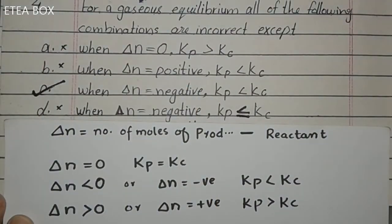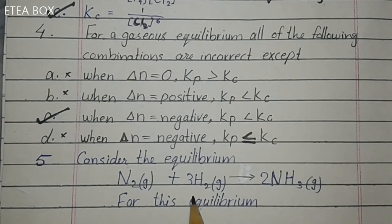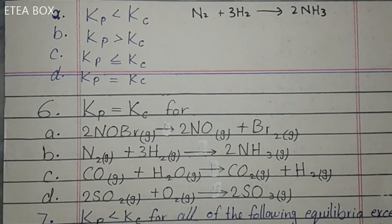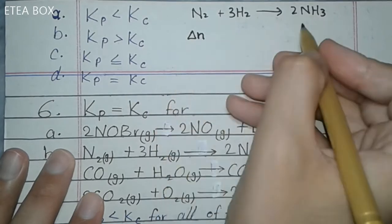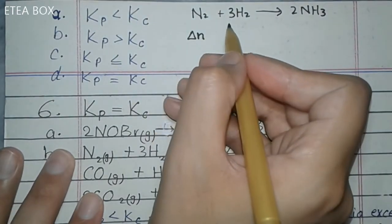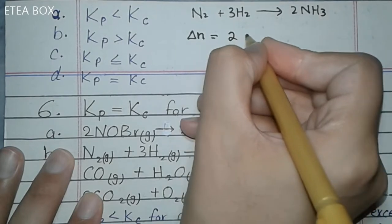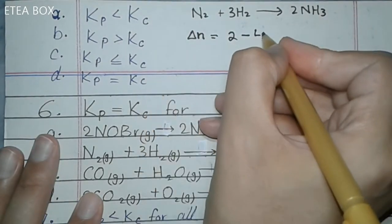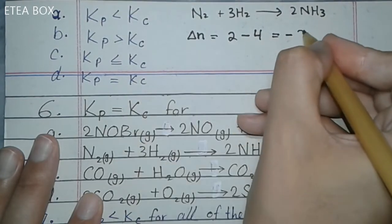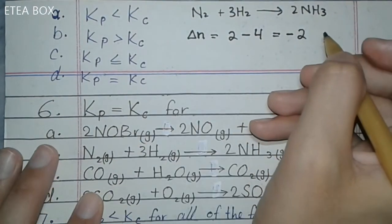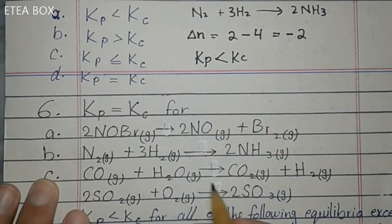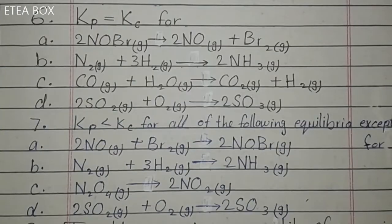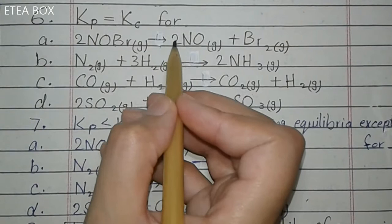Consider the equilibrium N₂ + 3H₂ ⇌ 2NH₃. Find Δn: moles of product is 2 minus moles of reactants is 4, so Δn = −2, which is negative. When Δn is negative, Kp is smaller than Kc. Looking at the options, option A is correct: Kp < Kc.